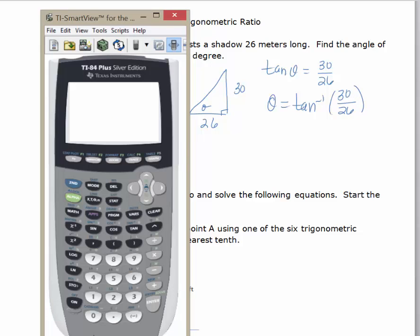Evaluate in our calculator. I am in degree mode. I want to hit second, tan, 30 divided by 26, close the parentheses, hit enter. I get approximately 49 degrees, and I'm rounding to the nearest degree.